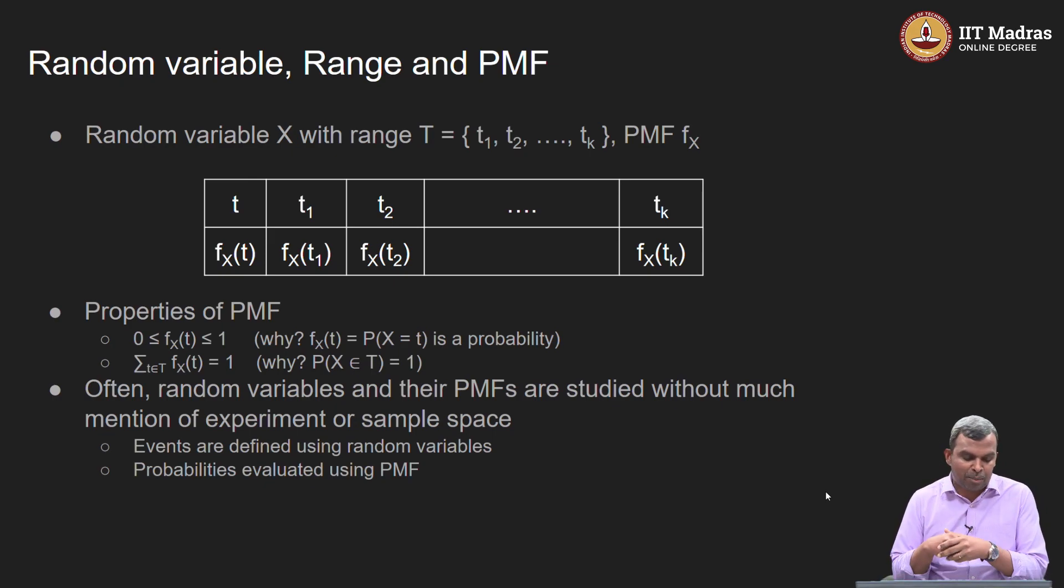Now what will happen? One very typical problem that you will see is somebody will give you a range and somebody will give you a PMF, a function from the range to 0, 1 or some anything else and ask you when is it a valid PMF. For that, you check these two conditions. You check whether every value taken by the PMF is between 0 and 1 and whether the value adds up to 1.